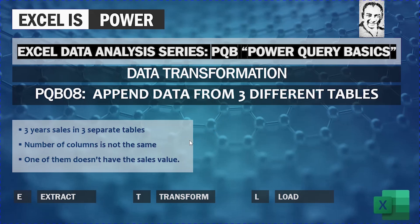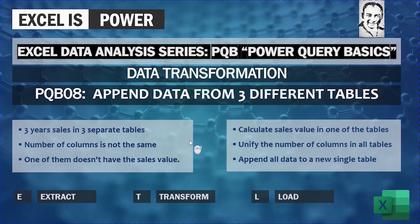The number of columns in each table is not the same. One of these tables does not have the sales value. What we require is to calculate the sales value in one of the tables and then unify the number of columns in all tables so we can append all data together in one single table.